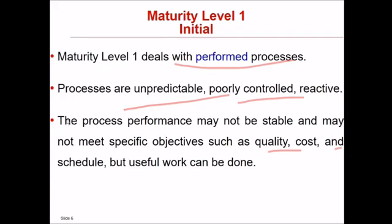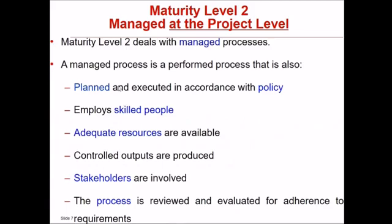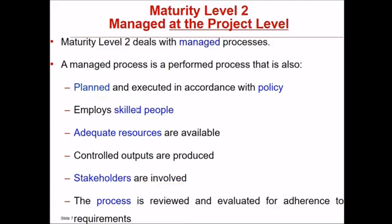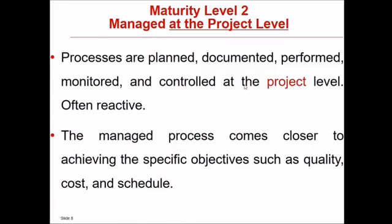At level one, useful work can be done but not in the manner sought. Maturity level two is Managed. A managed process is a performed process that is planned, employs skilled people, has adequate resources, produces controlled outputs, involves stakeholders, and is reviewed for adherence to requirements. Processes are planned, documented, performed, monitored, and controlled at the project level — often reactive. The managed process comes closer to achieving specific objectives such as quality, cost, and schedule.